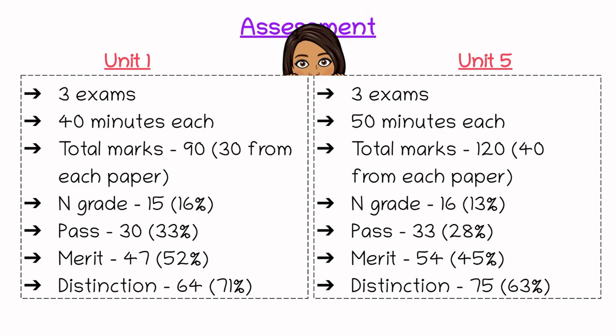The percentage of marks needed isn't vastly different between the two units. One thing to highlight is that there are a large number of marks between the grade boundaries — in Unit 1, 30 marks is a pass but you need an extra 17 marks to get the next grade up. Typically A-level grade boundaries are around 5 marks, so if an A-level student says BTEC is easy, please show them this part of the video.